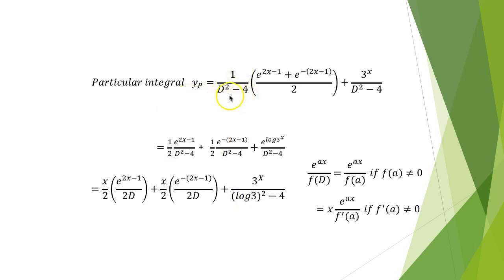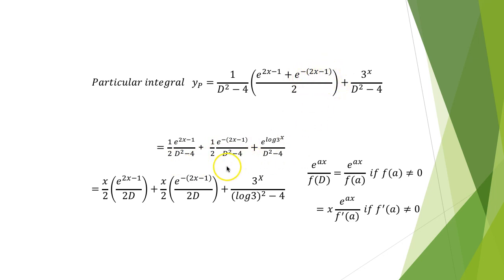The particular integral is [1/(D²−4)] applied to cosh(2x)−1 + 3^x. Using the definition of cosh, this becomes (1/2)·[1/(D²−4)] applied to (e^(2x)−1) plus (1/2)·[1/(D²−4)] applied to (e^(−2x)−1), plus [1/(D²−4)] applied to 3^x. We can rewrite 3^x as e^(x·ln3).